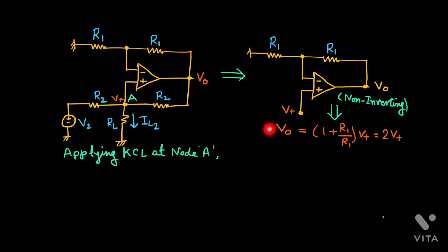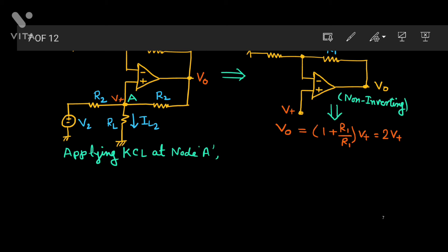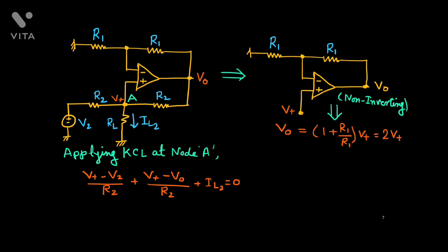Now we apply KCL at node A. We can express V+ in terms of V0. There are three branch currents here since no current enters the op-amp. The first term is (V+ minus V2) upon R2 — the current through R2 and source V2. The second term is (V+ minus V0) upon R2 — the current on the other side. The third term is IL2. Their sum equals 0.